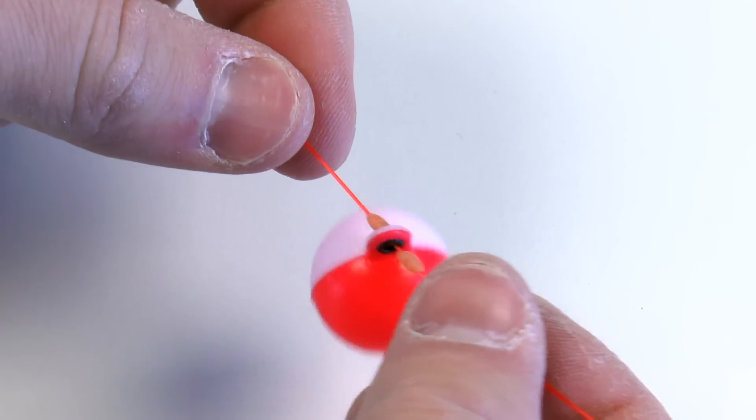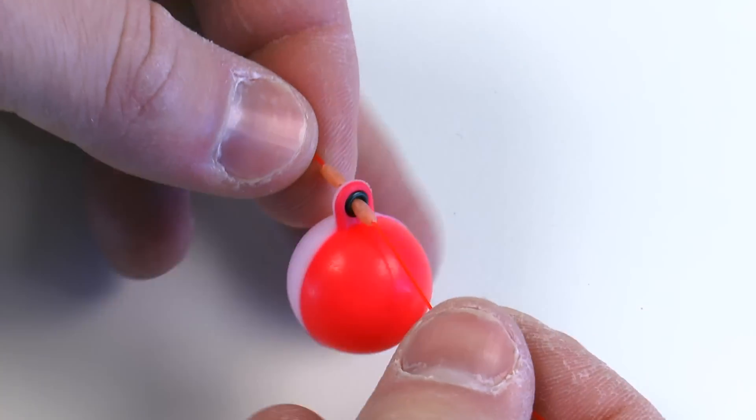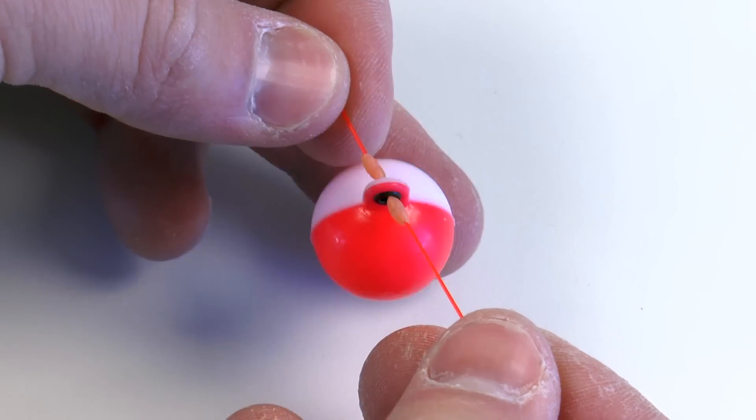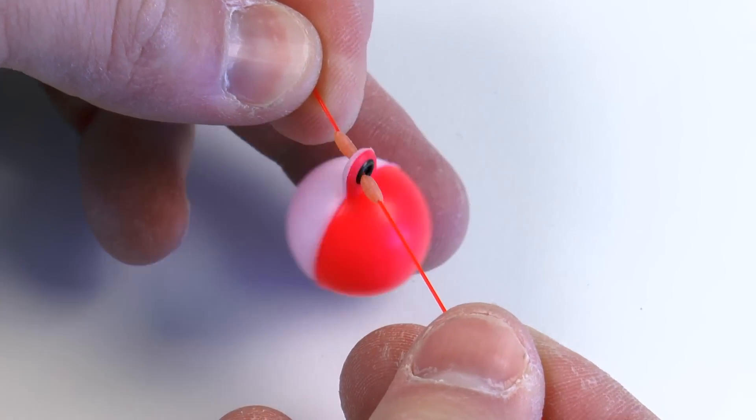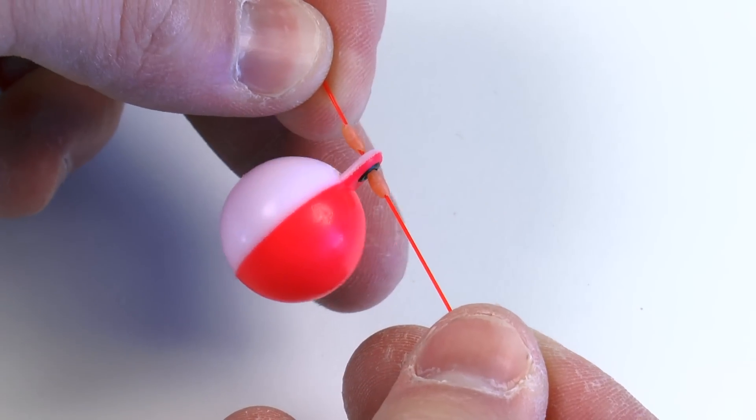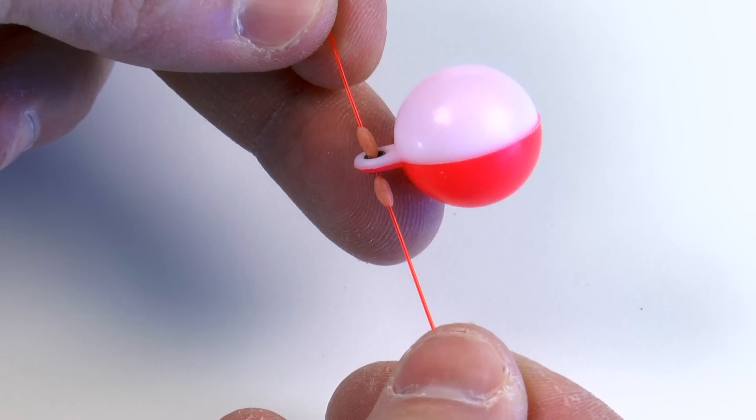So that makes it very easy to cast, much, much easier to cast than the traditional way of putting on the thingamabobber. But it also makes it much more sensitive. This will detect much lighter and smaller strikes.